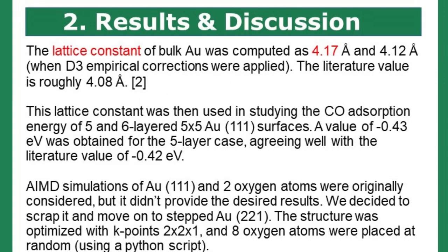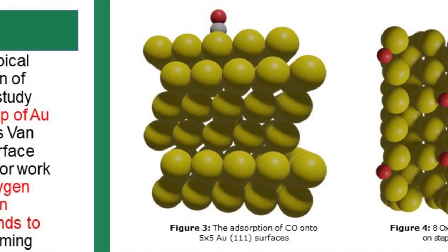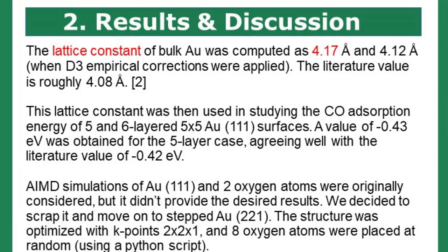The lattice constant of bulk gold was computed as 4.17 Å, but this can be improved to 4.12 Å using D3 empirical dispersion corrections. As a comparison, the literature value is 4.08 Å. This lattice constant was used to construct five-layered Au(111) 5×5 surfaces to look at CO adsorption on the structure, as seen in figure three. I obtained an adsorption energy for CO of -0.43 eV, which is very close to Young's value of -0.42 eV.